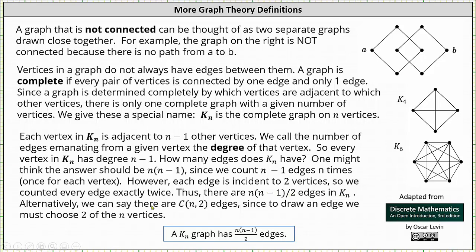Alternatively, we can say there are n choose two edges, since to draw an edge we must choose two of the n vertices. So again, in general, we can say a K_n graph has the product of n and n minus one divided by two edges.